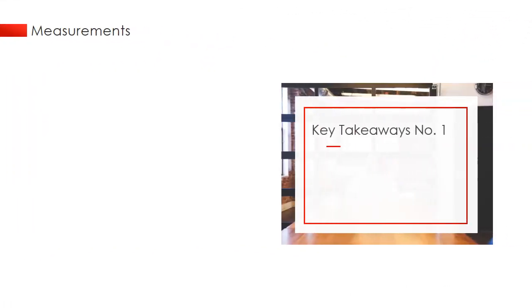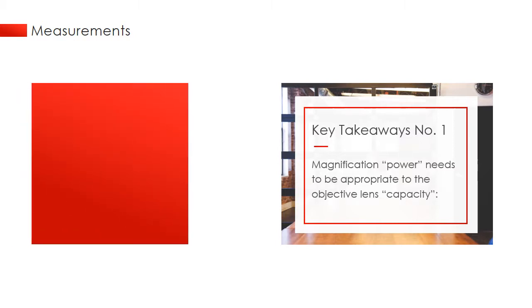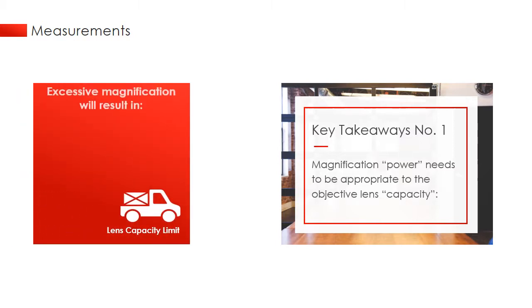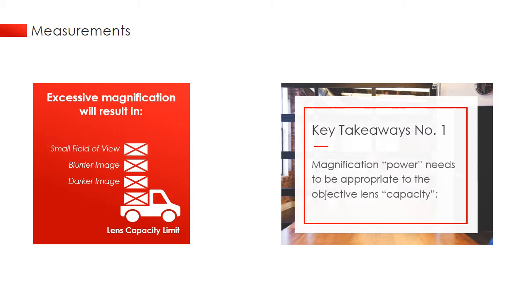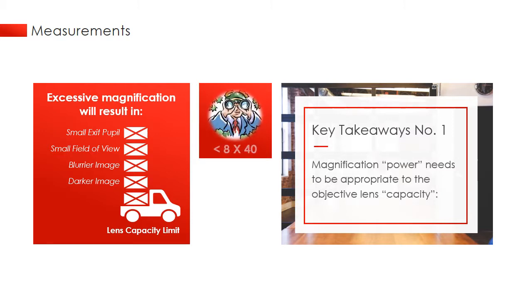First of all, binoculars magnification power needs to be appropriate to its objective lens capacity. Given capacity limits, excessive magnification power will only result in poor viewing performance, such as darker and blurrier image, smaller field of view, as well as smaller exit pupil.